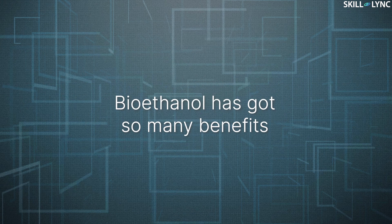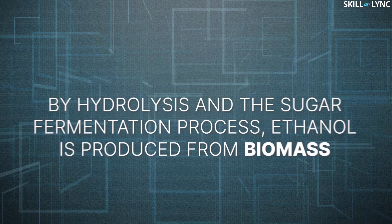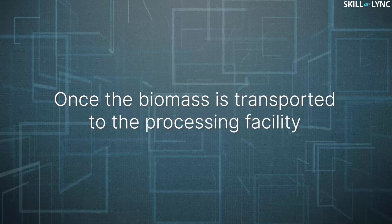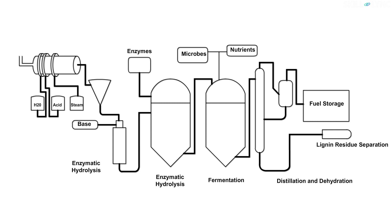Bioethanol has got so many benefits. So how is it produced? By hydrolysis and the sugar fermentation process, bioethanol is produced from biomass. Once the biomass is transported to the processing facility, in its first stage, it undergoes a pretreatment process. The feed system supplies biomass into a chamber. Here, with the help of steam and water, sometimes in the presence of chemicals, it is broken down into cellulose, hemicellulose, and lignin. In another approach, acid is used to break down the biomass into components.